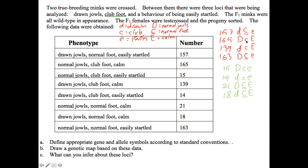This is a normal jowls, clubfoot, and calm. Normal jowls, clubfoot, and calm. So those are where the numbers come from.